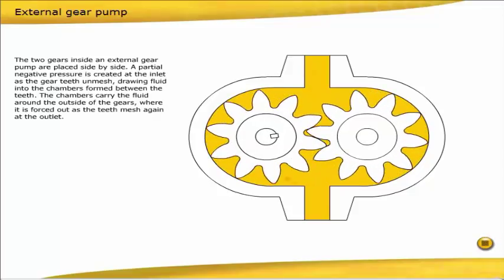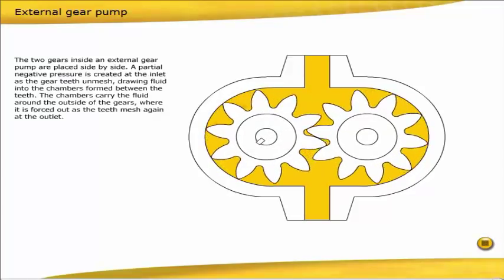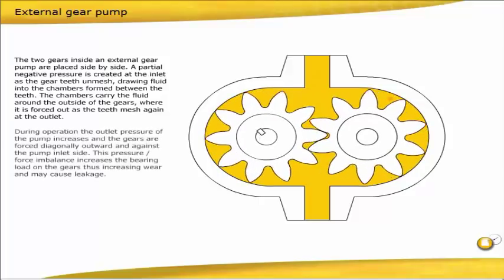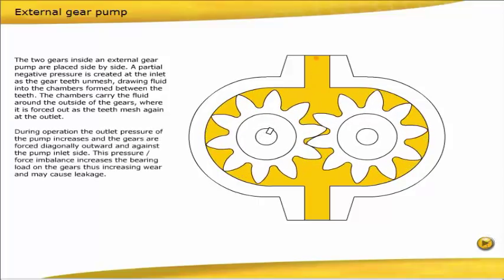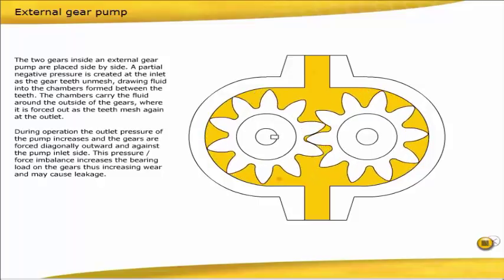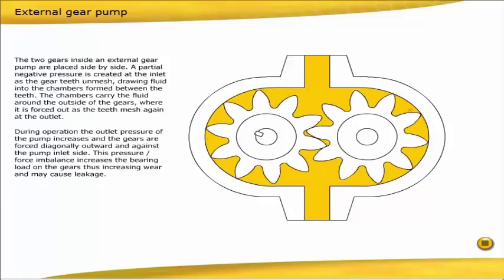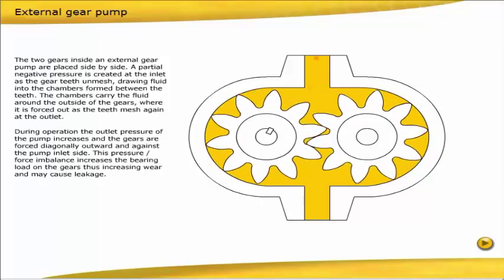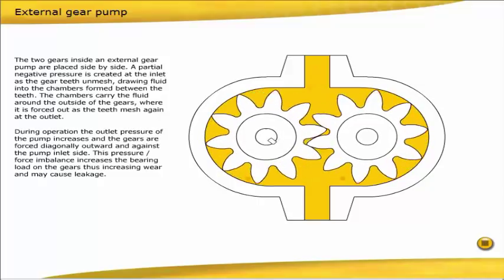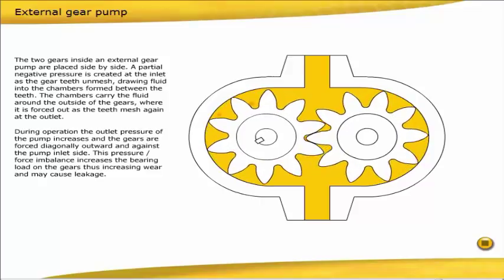The fluid is forced out as the teeth mesh again at the outlet. During operation, the outlet pressure of the pump increases, and the gears are forced diagonally outward and against the pump inlet side. This pressure-force imbalance increases the bearing load on the gears, thus increasing wear and may cause leakage.